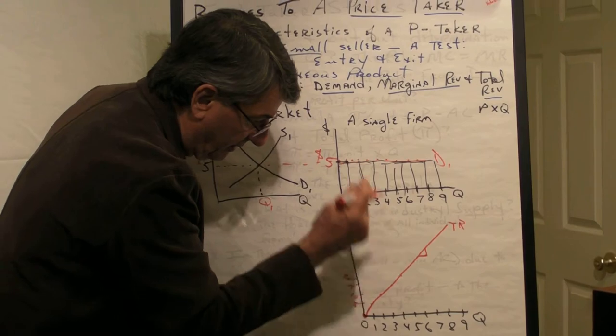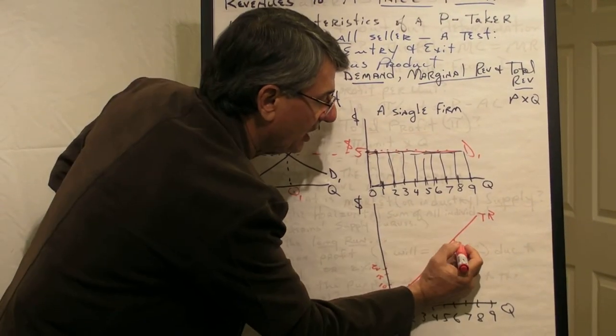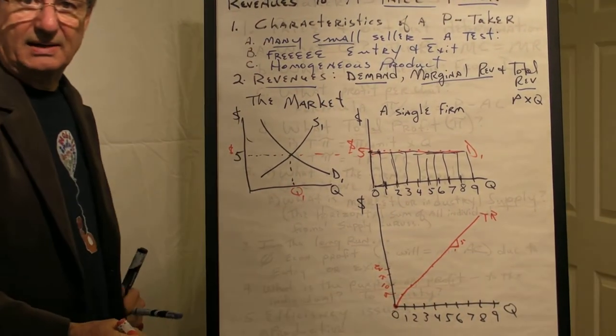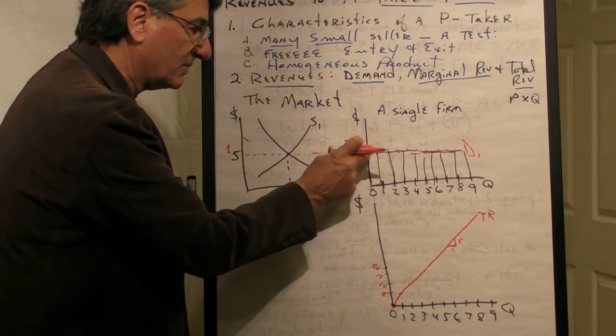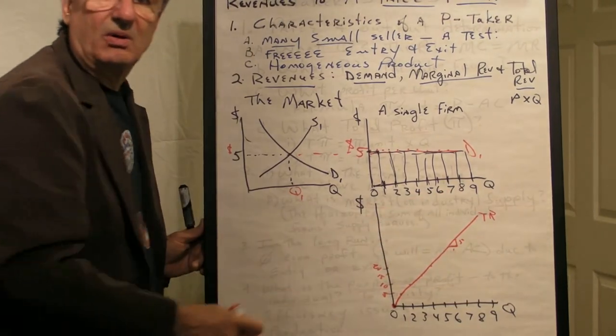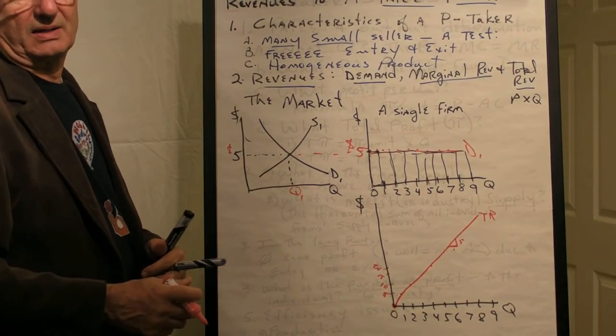So the slope of this thing, first of all, it's linear. And second, the slope of it is five, which is equal to the price. So when the price is determined to be five in the market, that's the firm's demand curve and that's the slope of a linear total revenue curve for that firm as well.